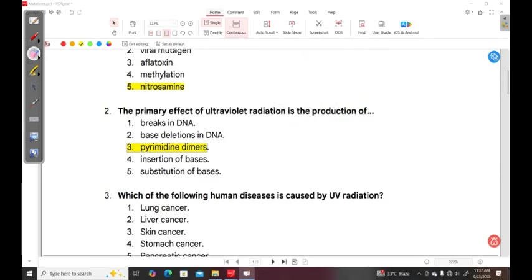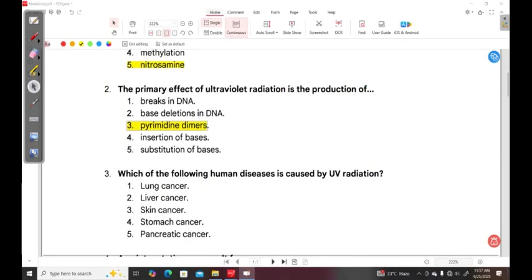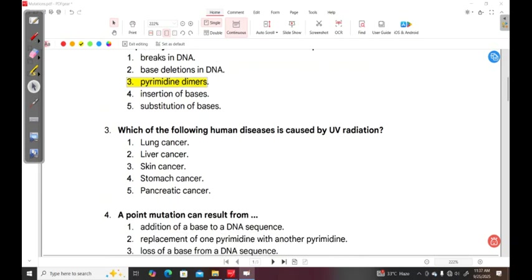Question three: Which of the following human diseases is caused by UV radiation? 1. lung cancer, 2. liver cancer, 3. skin cancer, 4. stomach cancer, 5. pancreatic cancer. The correct answer here is skin cancer.